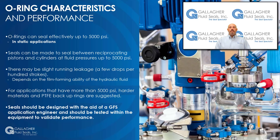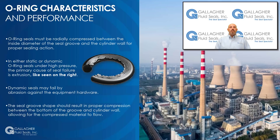O-rings can be used between rotating members with similar results, but the dynamic surface speed must be kept low. O-rings must be radially compressed between the inside diameter of the seal groove and the cylinder wall for proper sealing action. For either static or dynamic O-rings under high pressure, the primary cause of seal failure is extrusion of the material into the hardware clearance gap. The major factors affecting extrusion are fluid pressure, seal hardness, and piston-cylinder clearance. Dynamic seals may also fail by abrasion against the equipment hardware; therefore, contacting surfaces should be properly polished for extended seal life. Moving seals that pass over ports or other surface irregularities while under hydraulic pressure are very quickly damaged and will fail prematurely.